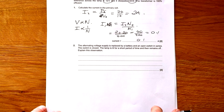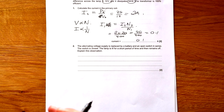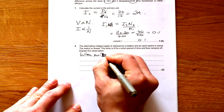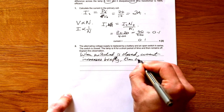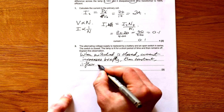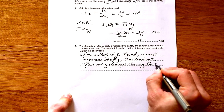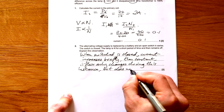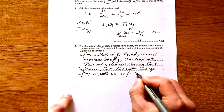Part 2 continued: if the AC supply is replaced by a battery and open switch in series, when the switch is closed the current increases briefly then remains constant. Therefore the flux only changes momentarily, so EMF is only induced briefly — after that there's no change in flux and no EMF is induced, so the lamp goes off.